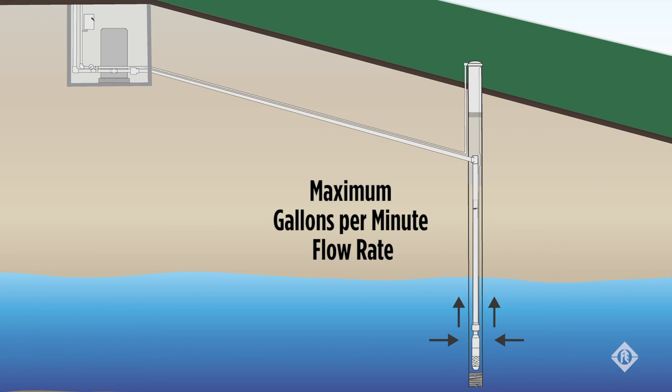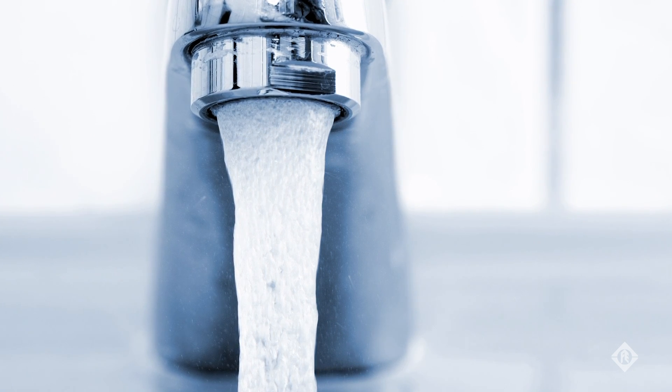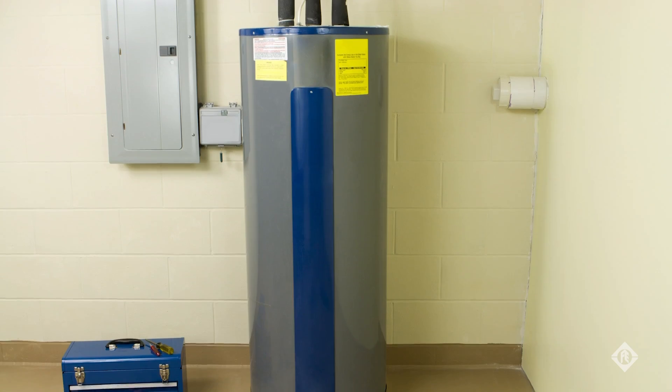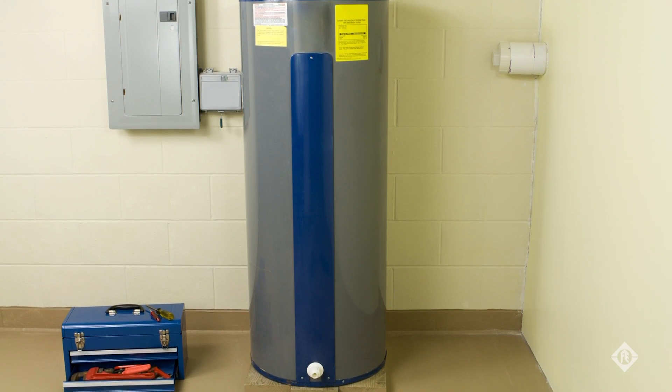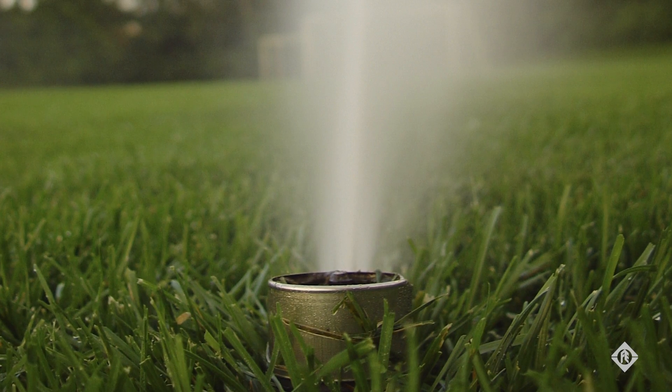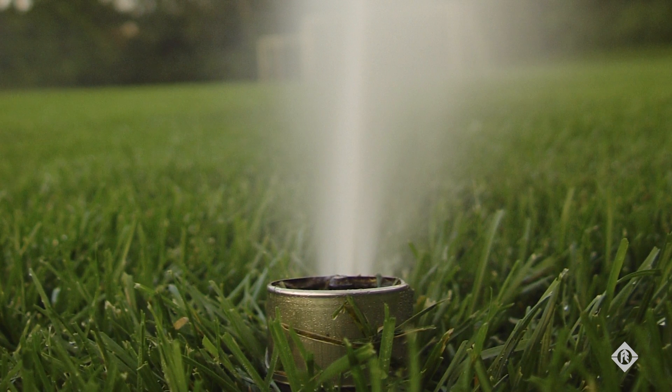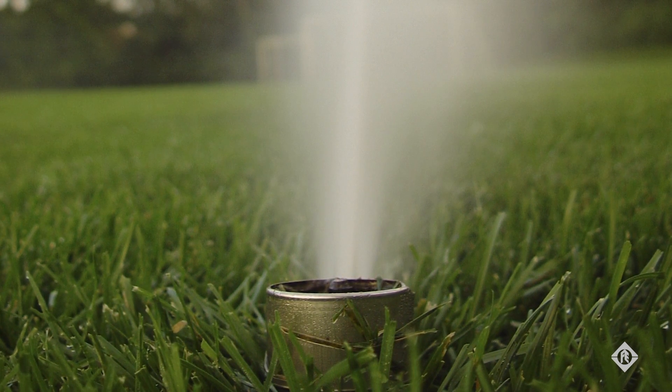Two, maximum gallons per minute flow rate needed to meet your needs is dependent on the usage anticipated by the user, which can include fixtures in the house or building, heat pump requirements, and possible irrigation. Irrigation can impose a high demand on one source of water and needs to be considered carefully when being addressed.